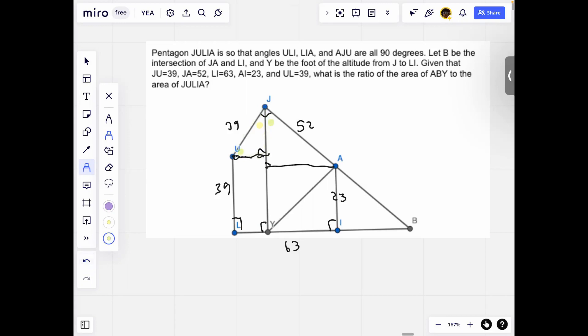Similarly, we know that this triangle is a right triangle, so this angle is yellow. So these two triangles are clearly similar.